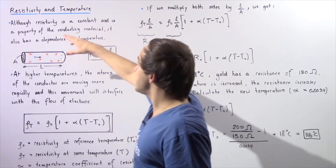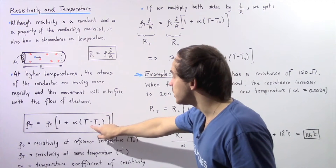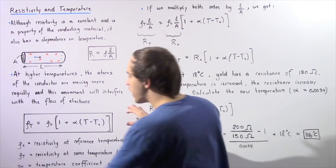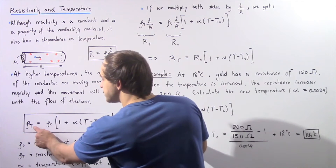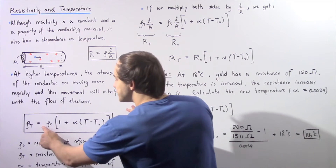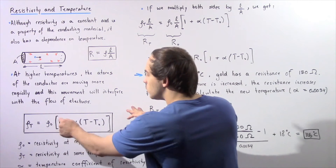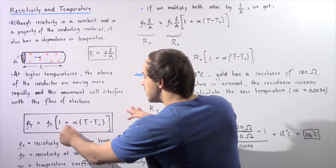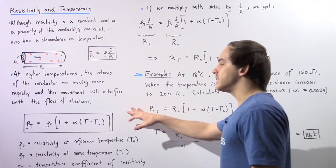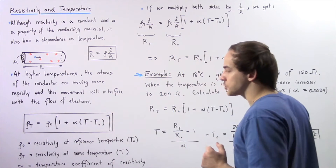So basically our resistivity depends linearly on the temperature, and that is given by the following equation. Our resistivity at a particular temperature is equal to the resistivity at some reference temperature multiplied by 1 plus the temperature coefficient of resistivity for that material multiplied by the difference in temperature.